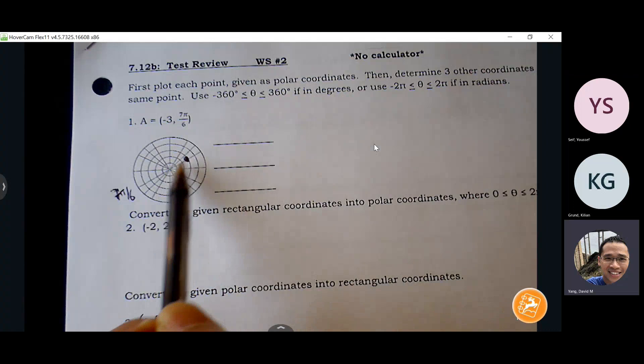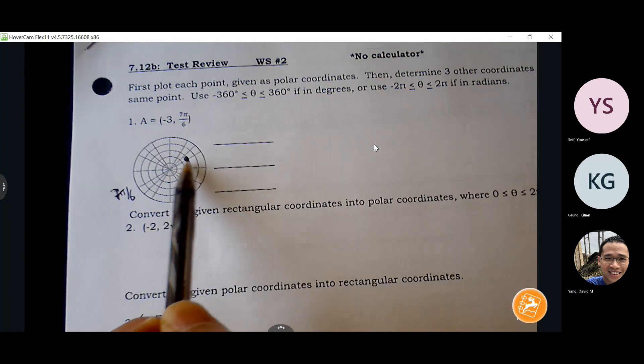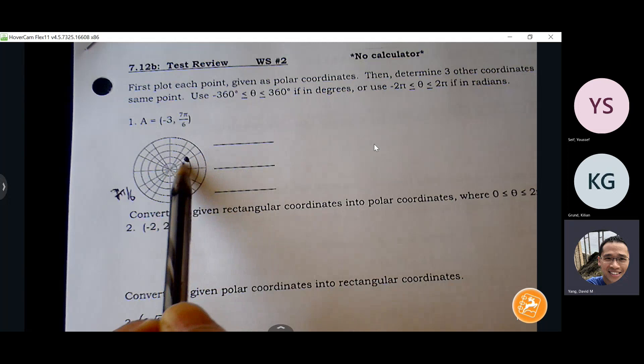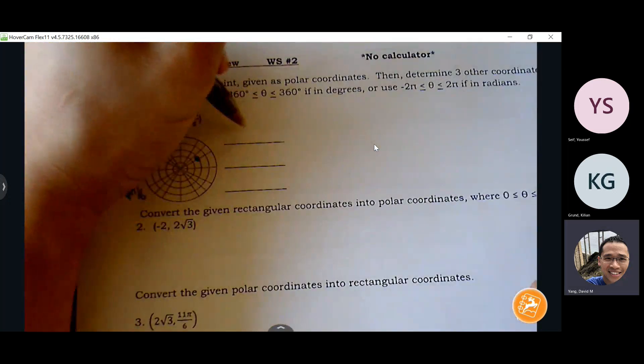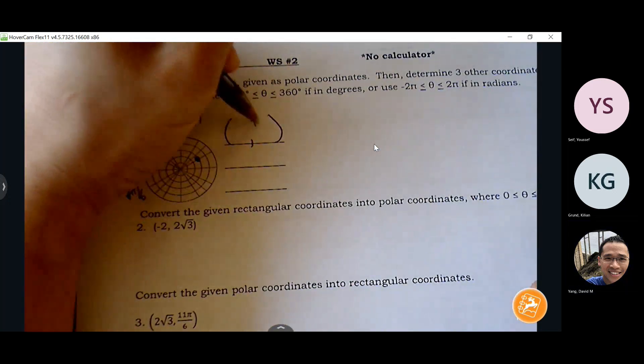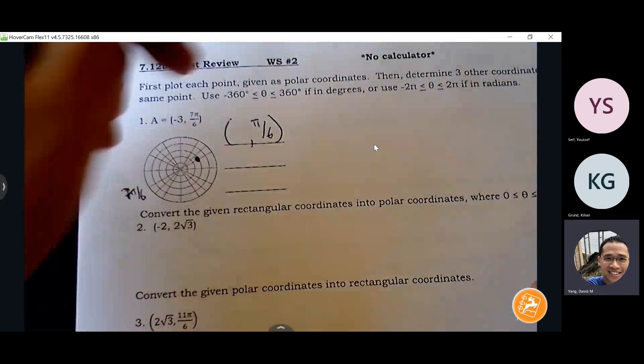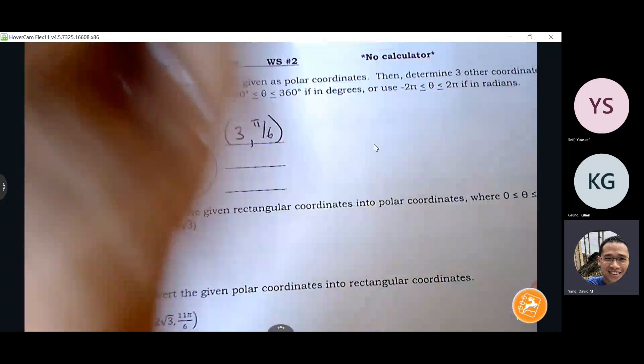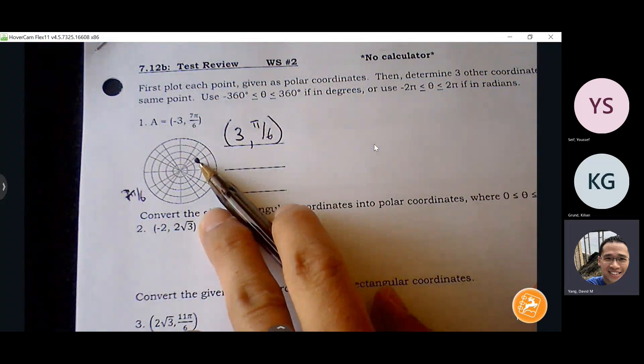Okay, so an easy one is first quadrant, which was the radian measure of this pi over six. And I'm walking three units towards pi over six to hit that point. So that's good, right?